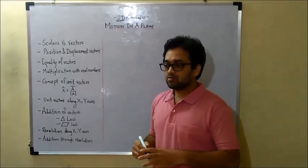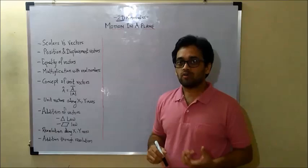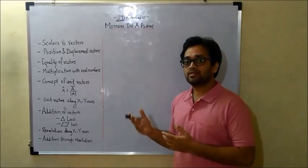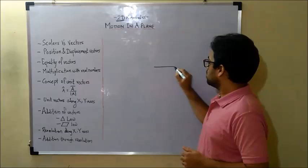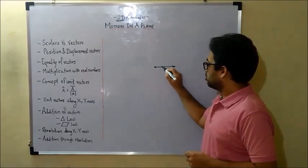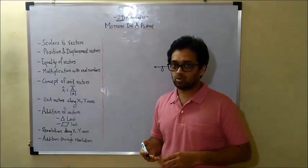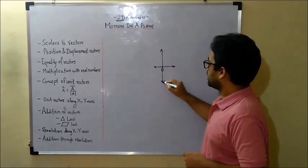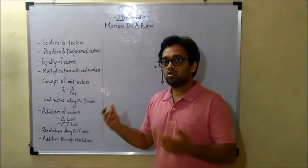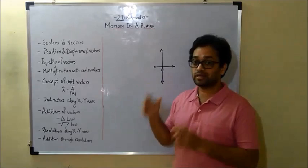And that is why the concept of vectors — basically the concept of direction along with the magnitude — becomes more relevant here. Not that the concept didn't exist in one-dimensional motion; it did exist. But the only difference was that motion was either forward or backward. In two-dimensional motion, your motion can be either up, down, rightward, or leftward, which opens a whole new lot of possibilities. That is why the concept of vectors — that is, direction, where exactly the motion is happening — becomes important.